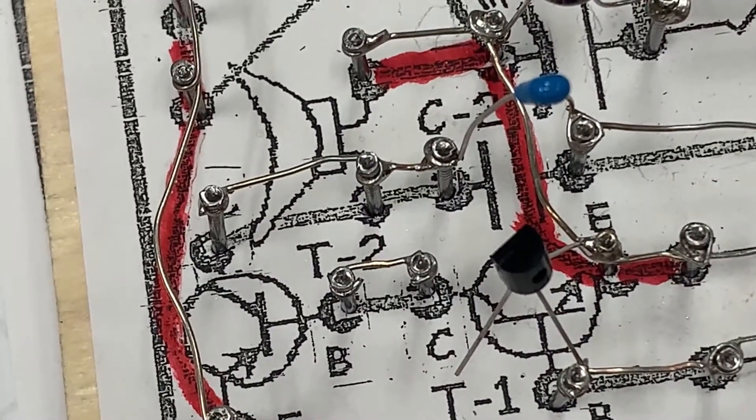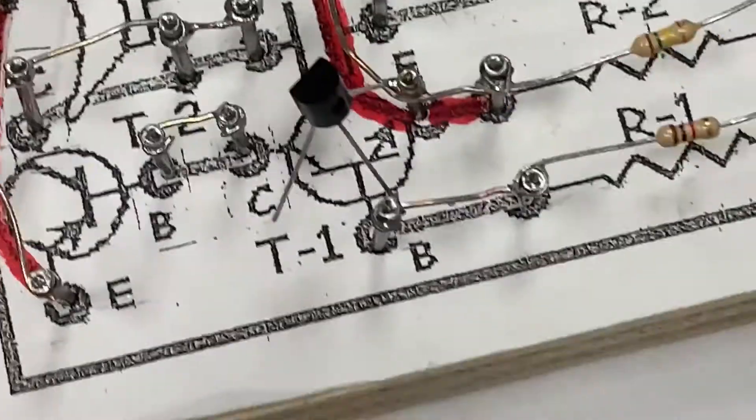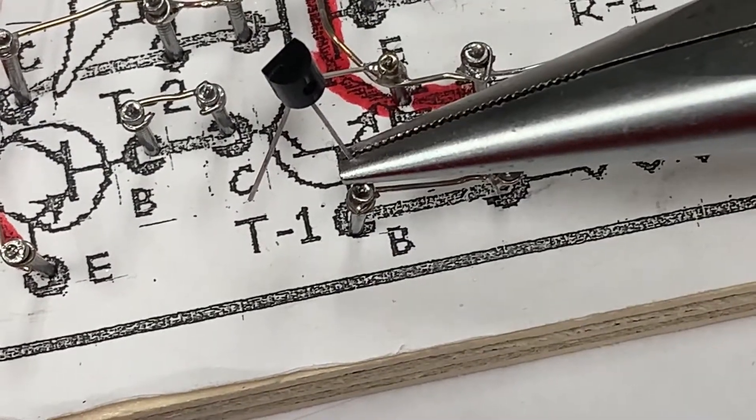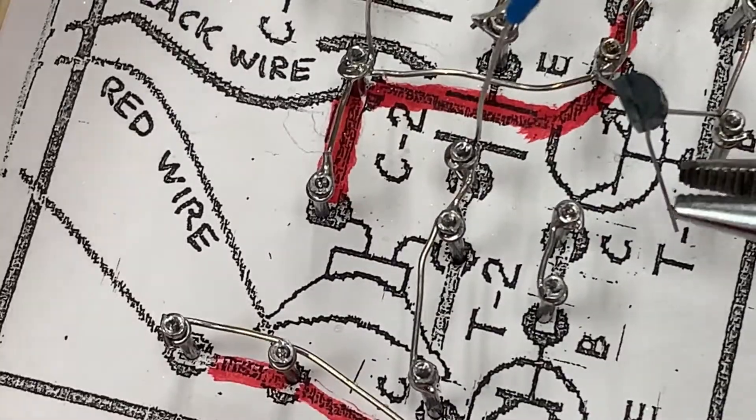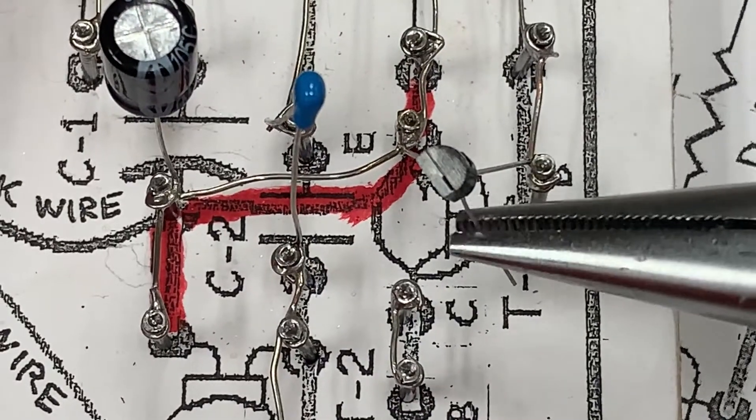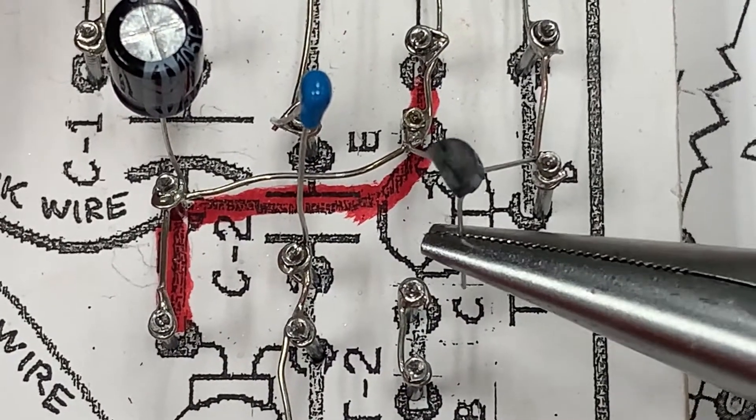After it dries, check that the connection is secure by grabbing it with your pliers and giving it a little gentle tug. And then you'd repeat the third process of connecting the last leg over to the nail that it needs to go to.